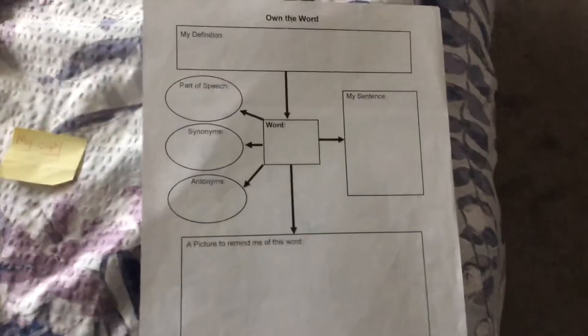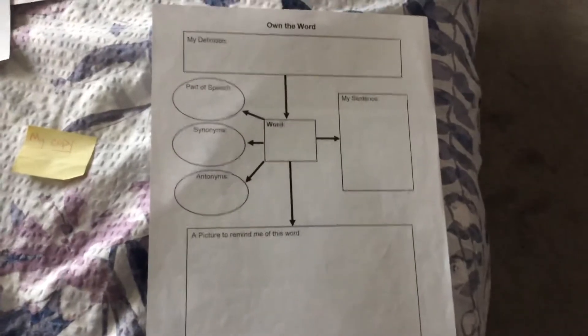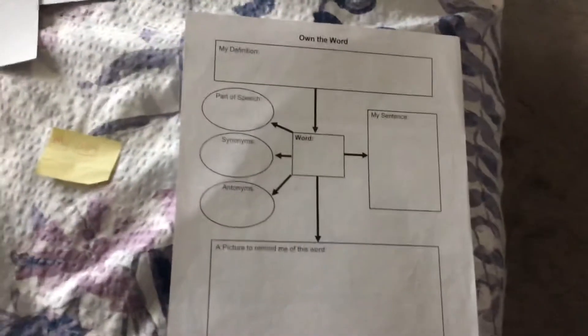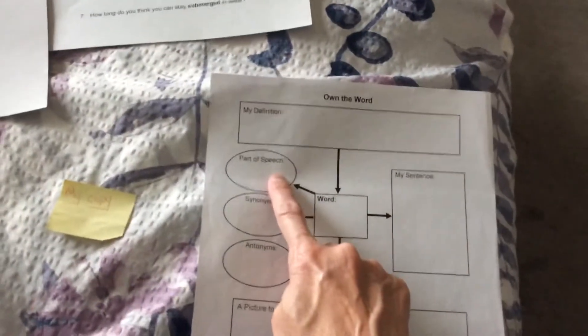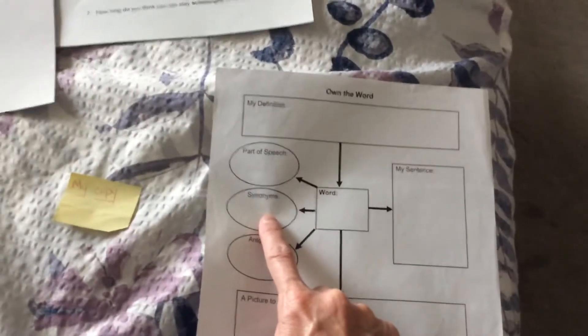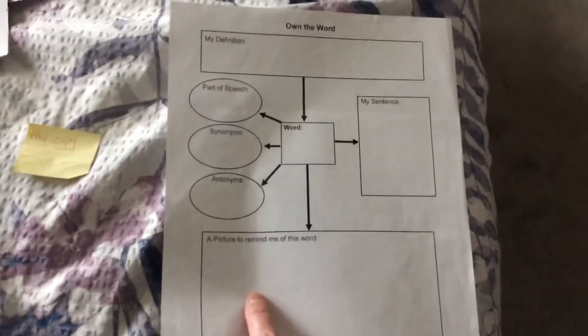Please choose two of the vocabulary words from Chapter 1 and complete the Own Your Word. You write the word in the word box. You write the definition of the word. You use the word in a sentence. You put the part of speech of the word, whether it's a verb, a noun, adjective, and so on. If you can, find a synonym for the word, which is a word that means the same. If you can, find an antonym of the word, which is a word that means the opposite, and draw a picture to remind you of that word.